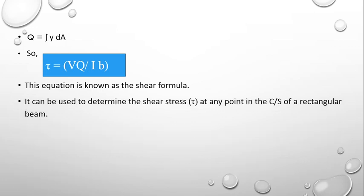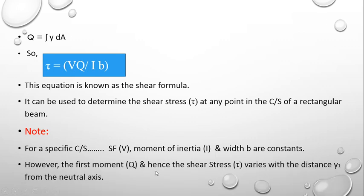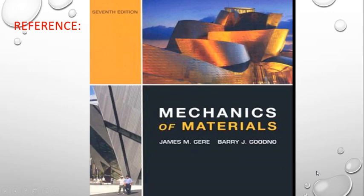The shear formula tau = VQ/(Ib) can be used to determine the shear stress at any point in the cross-section. For a specific cross-section, shear force V, moment of inertia I, and width b are constants; therefore the first moment Q and hence shear stress tau vary with distance y1 from the neutral axis. For this explanation, reference has been taken from Mechanics of Materials by James M. Gere and Barry J. Goodno, 7th edition. Thank you.